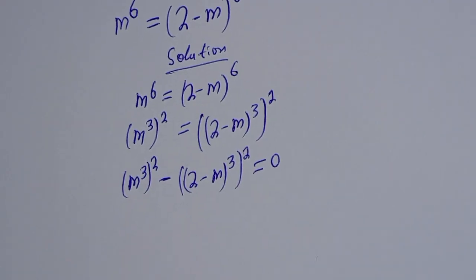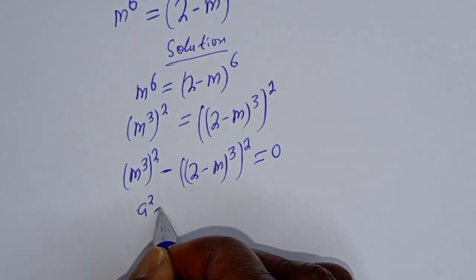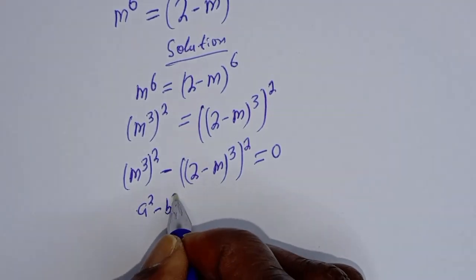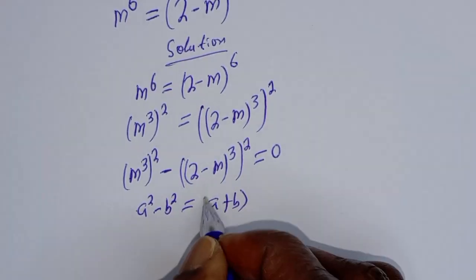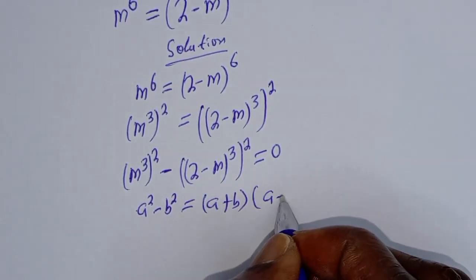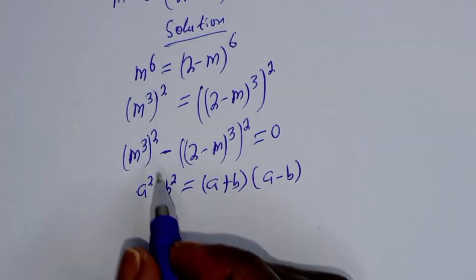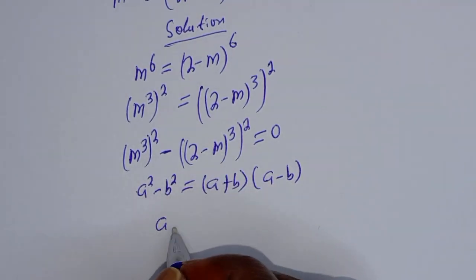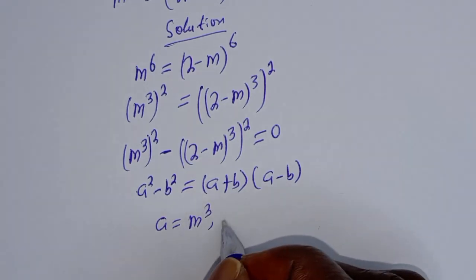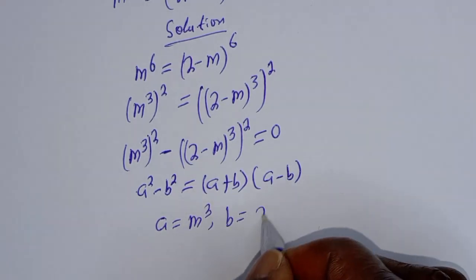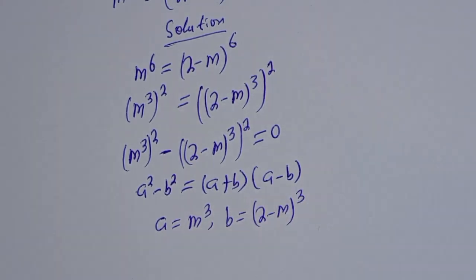This is in the form of a perfect square. If you have a squared minus b squared, this is equal to a plus b, bracket a minus b. From this equation, a is equal to m raised to power 3, and b is equal to 2 minus m raised to power 3.